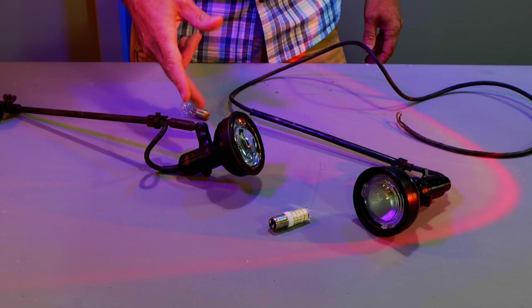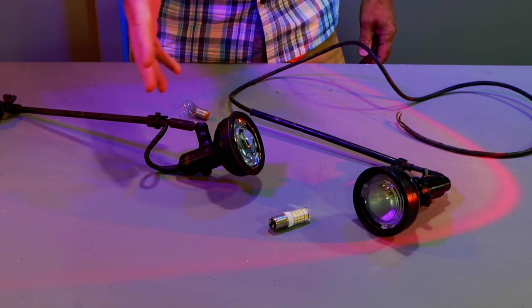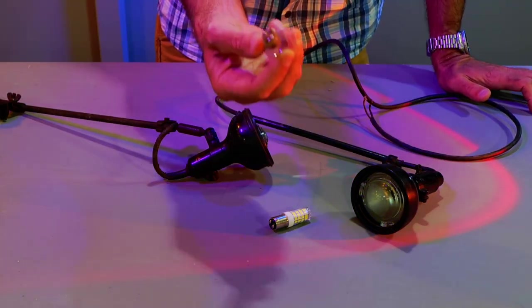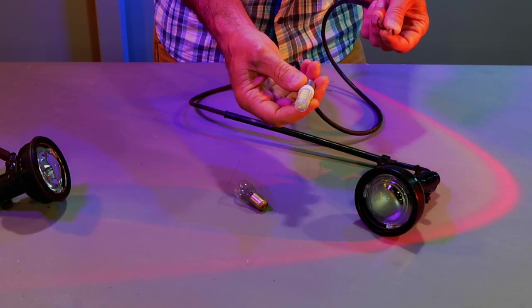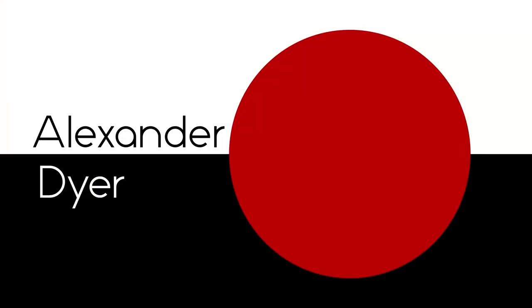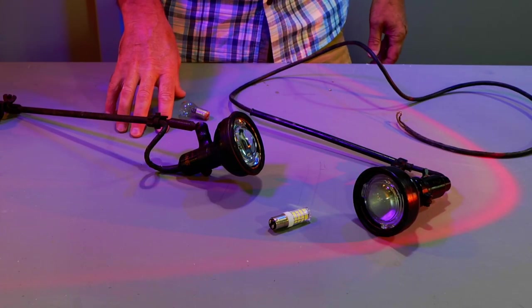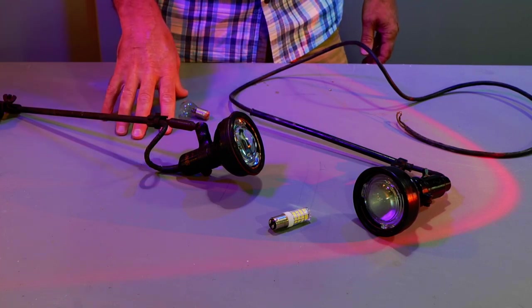Today I want to talk about Singer industrial sewing machine lights. Six volt bulb, the 120 volt bulb. You'll see these on old Singer industrial sewing machines.